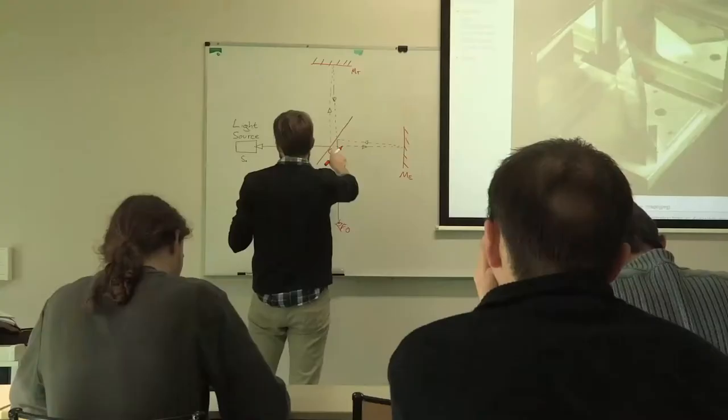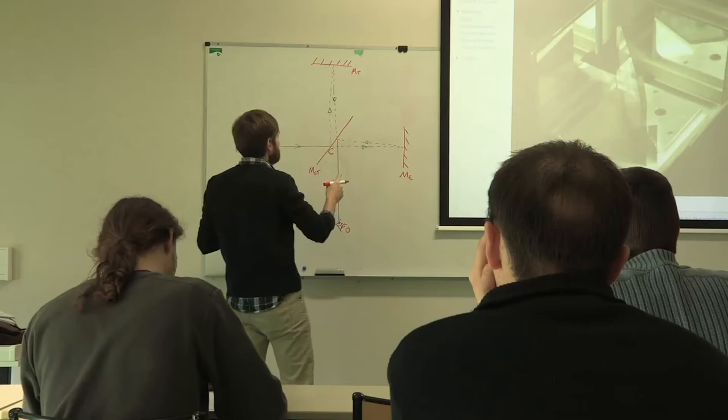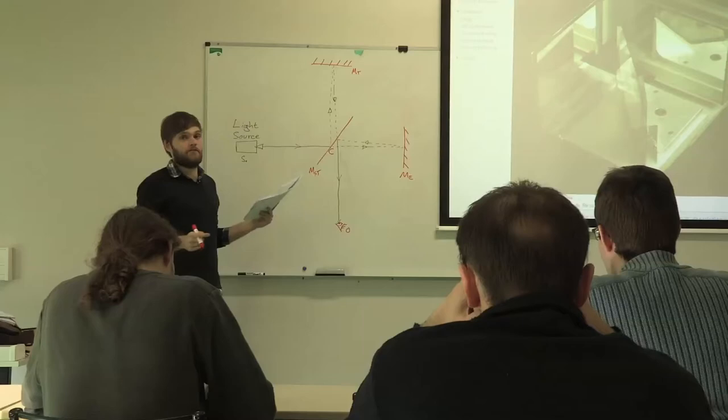That hits a half-silvered mirror, surface M at point C. M is partially reflective, so one beam is transmitted through to point B, while the other one is reflected in the direction of A. The figure shows the path of light of the Michelson interferometer.